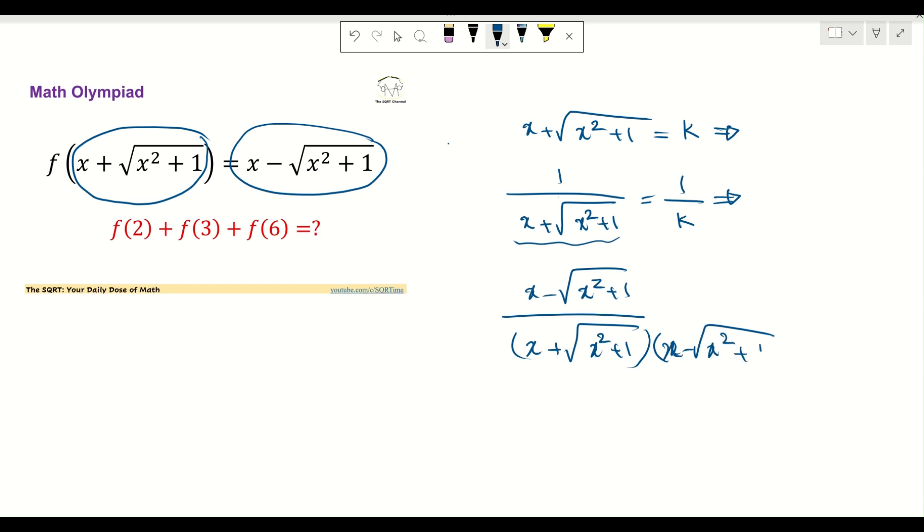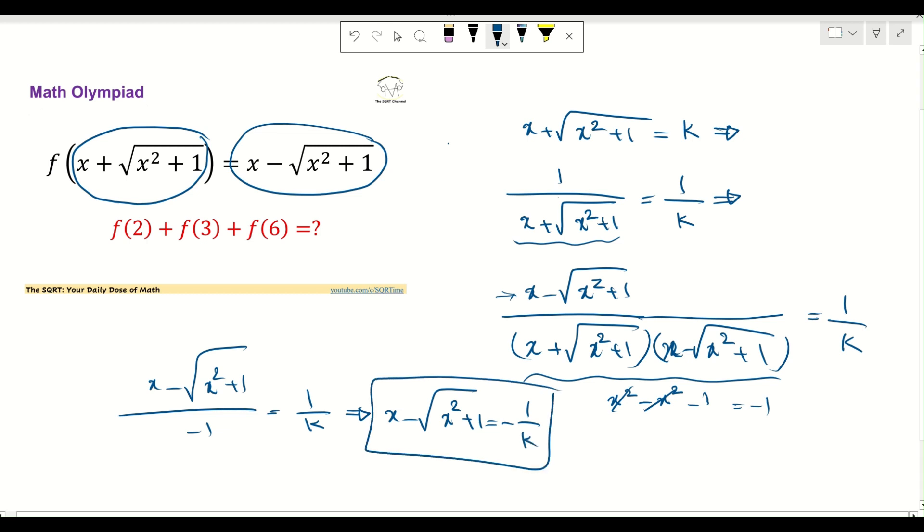Again note that we are not going to have this value as 0. So I can say that this is basically x² - x² - 1, so it's going to be negative 1. And then I will have (x - √(x² + 1)) over negative 1 as 1/k, or I can say that x - √(x² + 1) = -1/k. So what I have here is basically something interesting: f(k) = -1/k.